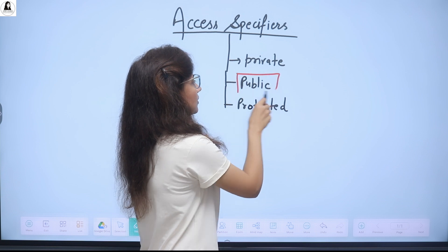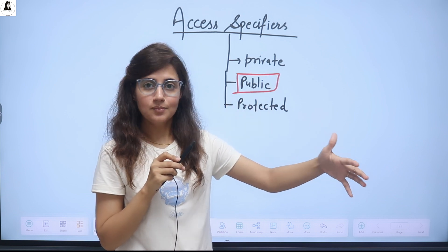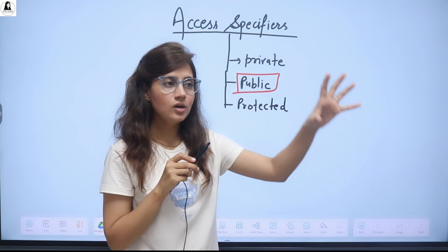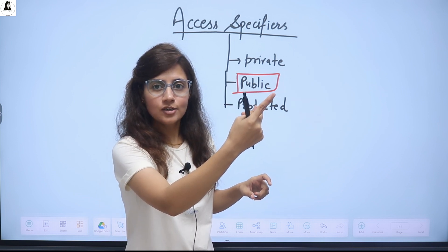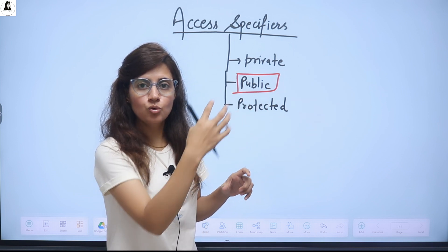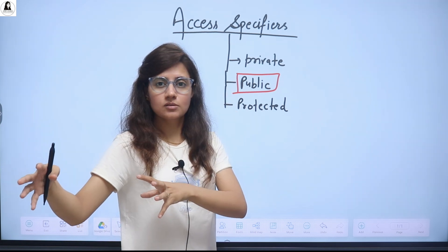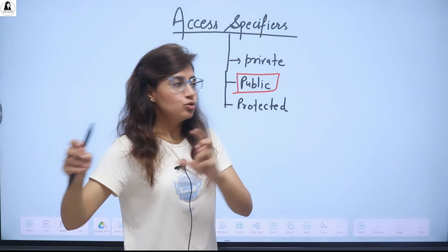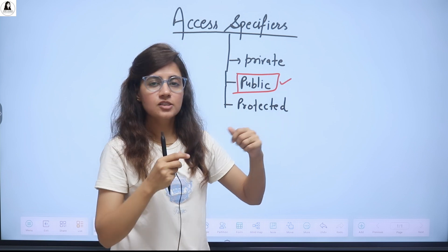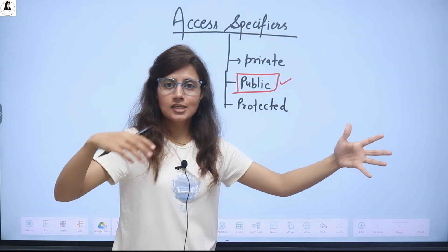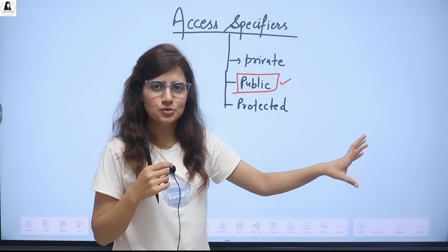Public we have already seen. In the previous cases when we were writing programs, we made all our class members public — all the attributes and the methods. That way, we can access those class members outside the class using the object. Public class members are accessible everywhere, inside the class as well as outside the class. We have seen this in examples in previous videos.